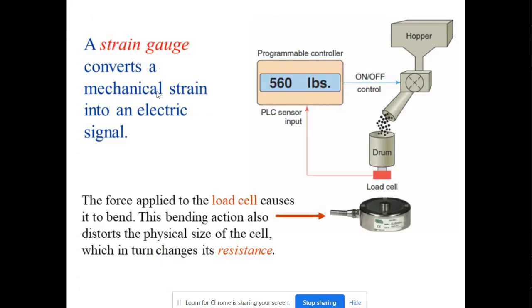The strain gauge converts the mechanical strain into electrical signal. I believe we have learned some of this strain gauge in the subject Instrumentation and Measurement. This is one of the applications of this strain gauge where force is applied to the load cell. We use the load cell to cause it to bend. This bending action also distorts the physical size of the cell which is turned into resistance. We calculate the rate of change in resistance.